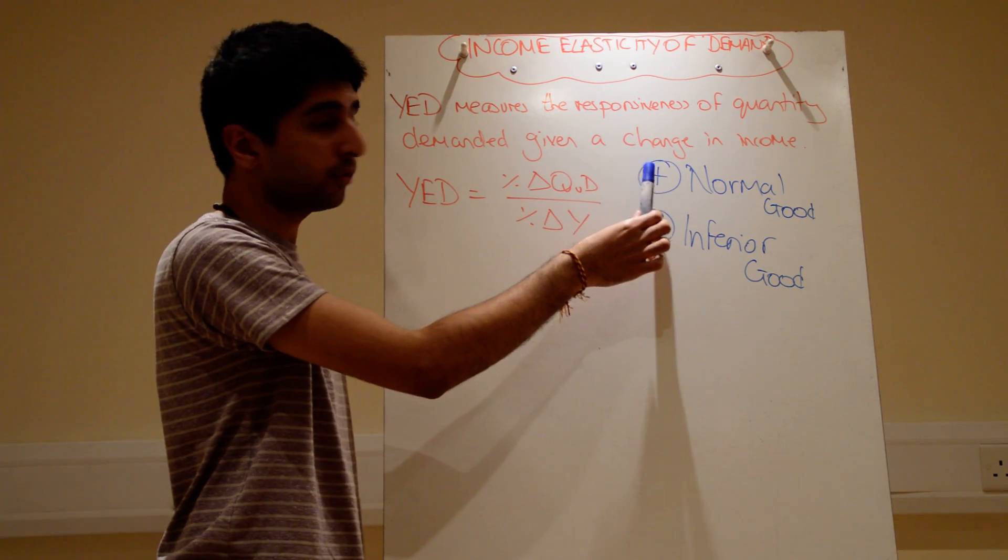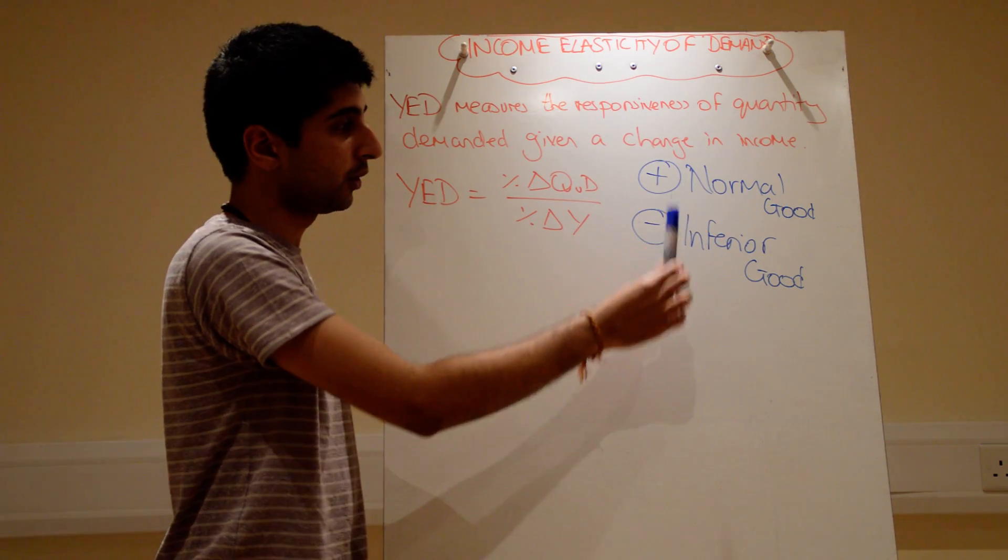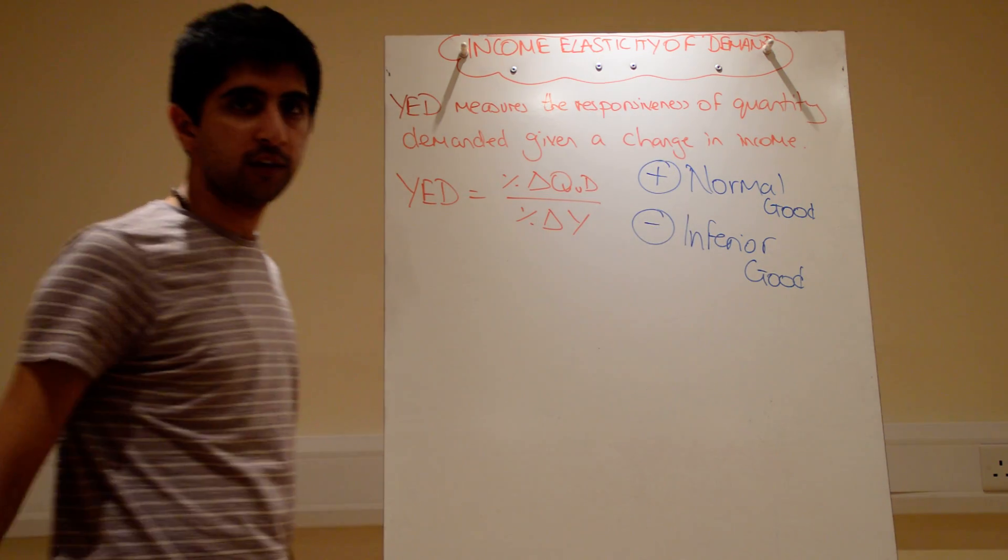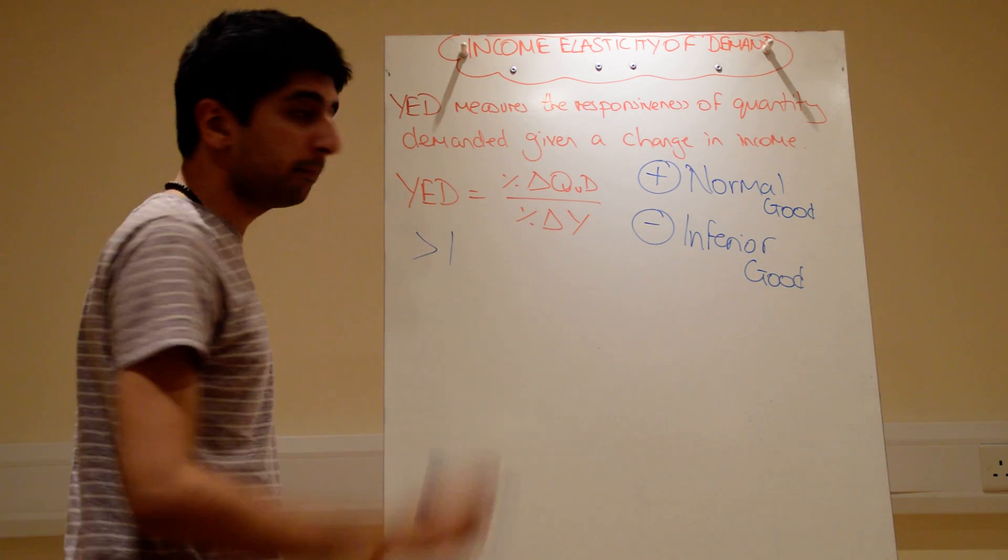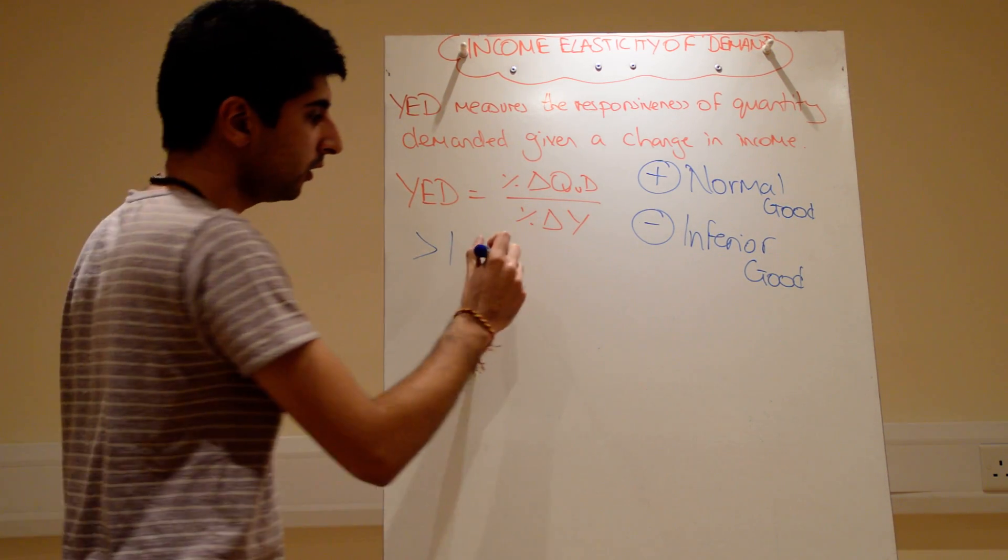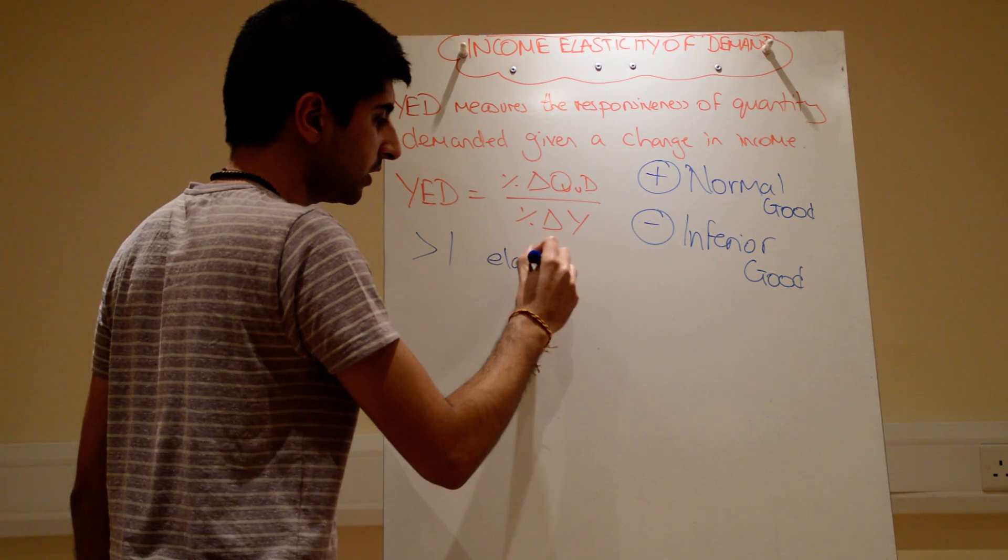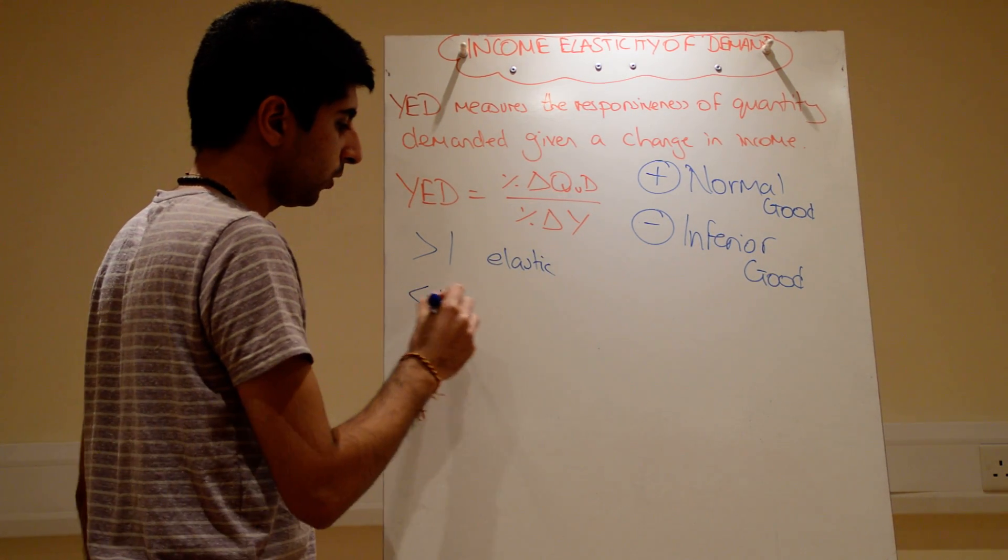So that's what you can expect. If you get a positive YED figure, you're working with a normal good. Negative figure, inferior good. And exactly the same as before, if your YED figure is greater than one, we have an elastic relationship. Less than one, inelastic.